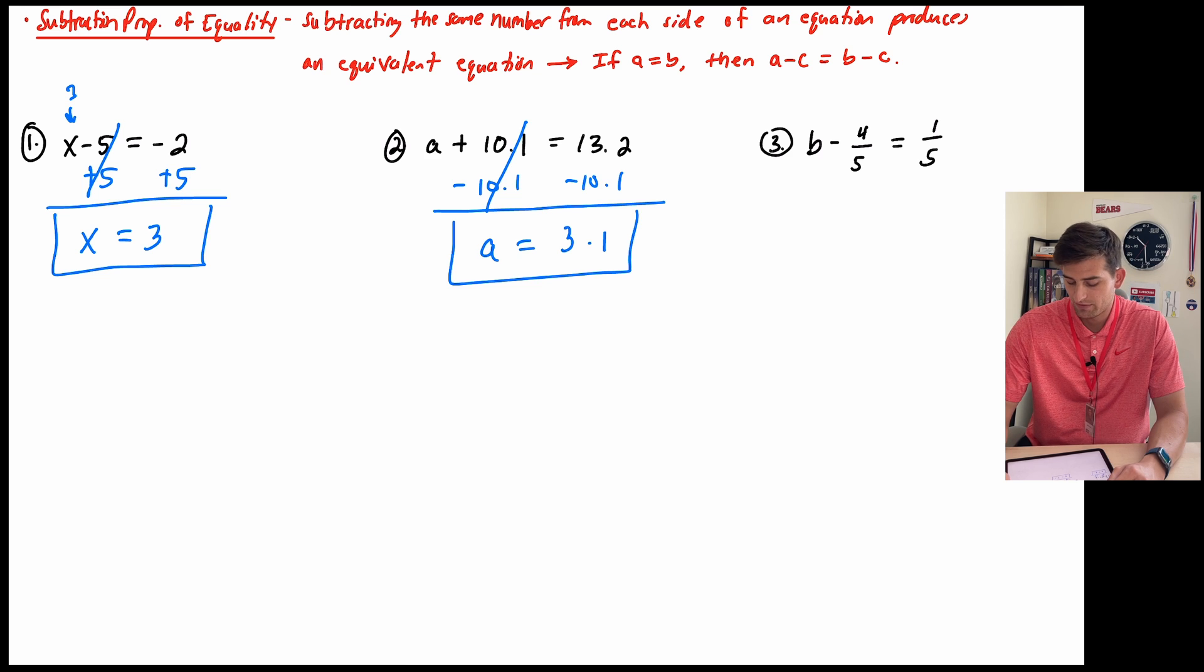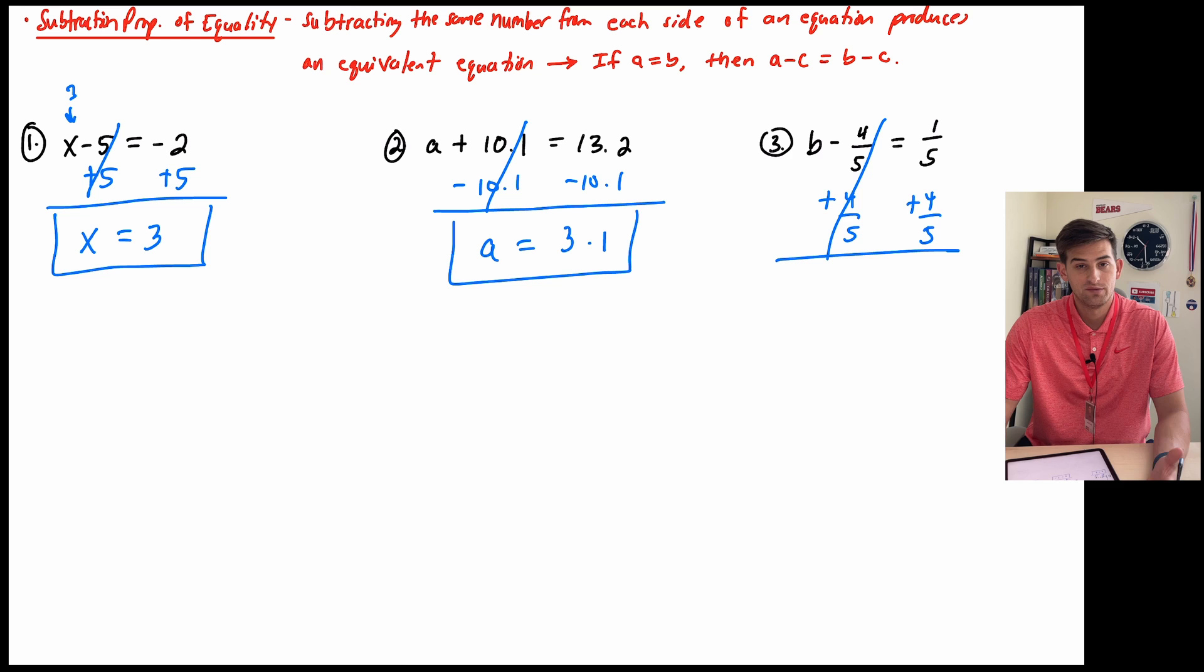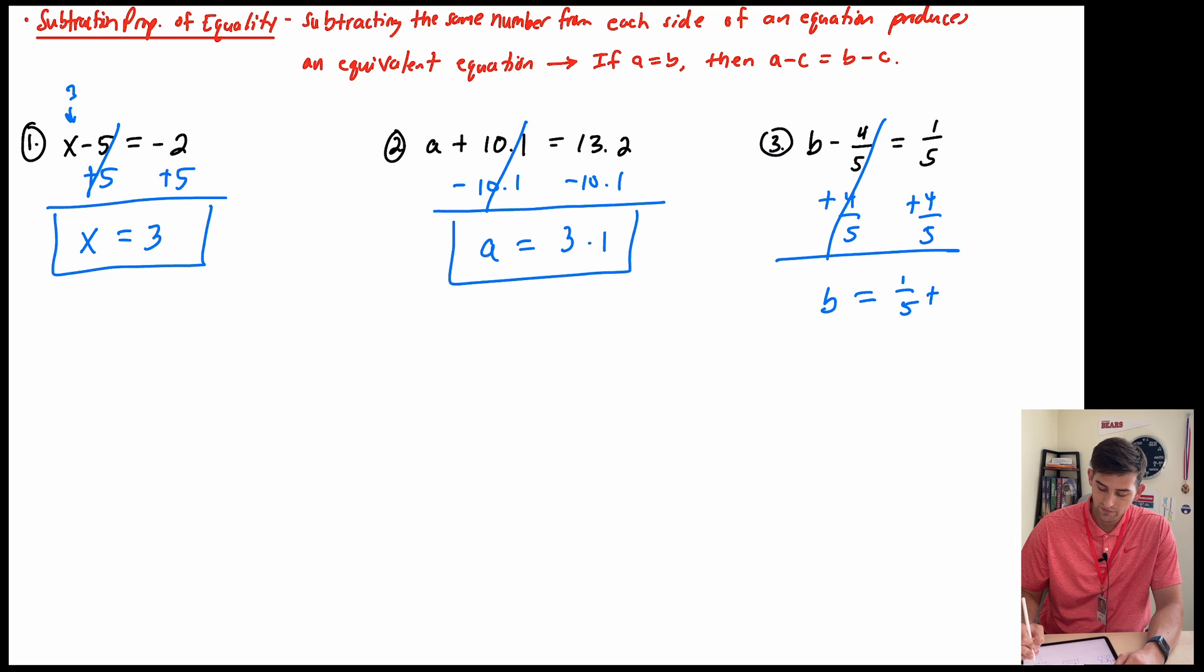And the last one, number 3, B minus 4 fifths is equal to 1 fifth. So now we can do the opposite of minus 4 fifths, which would be add 4 fifths, and we're going to do that to both sides. My 4 fifths on the left side will cancel because they're opposite of each other. So we get B is equal to, and 1 fifth plus 4 fifths would be 5 fifths, which would just equal 1. So for number 3, B would equal 1. And that is how we can use the addition and subtraction properties of equality.